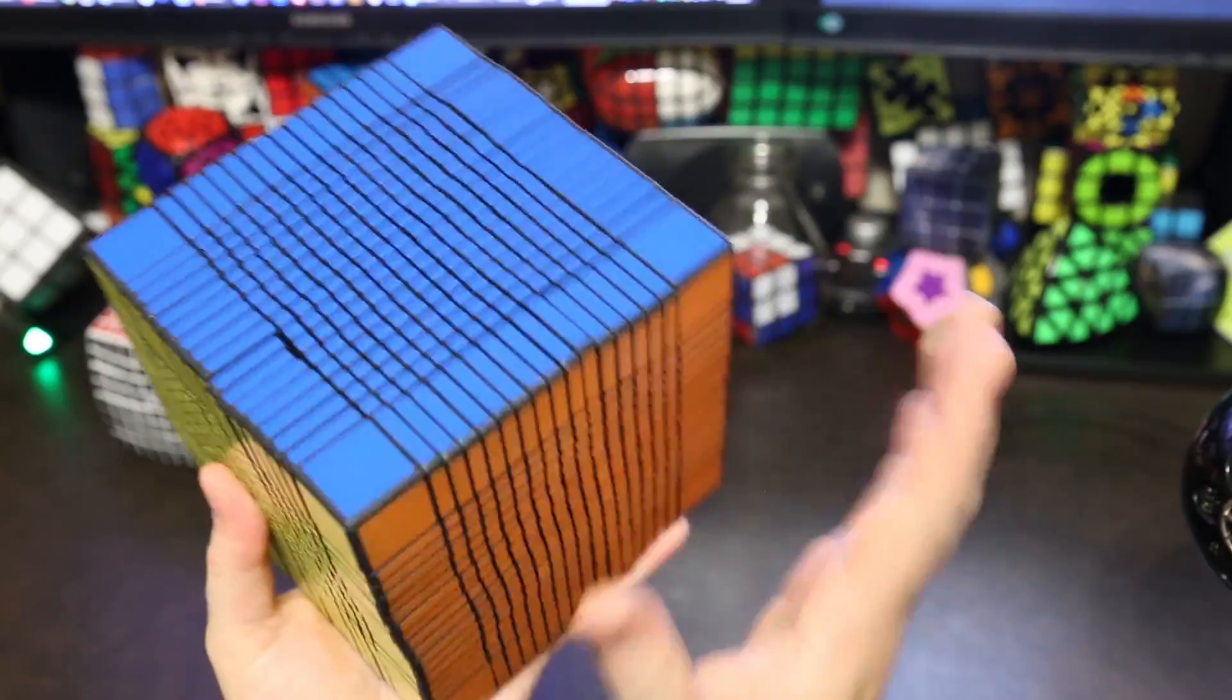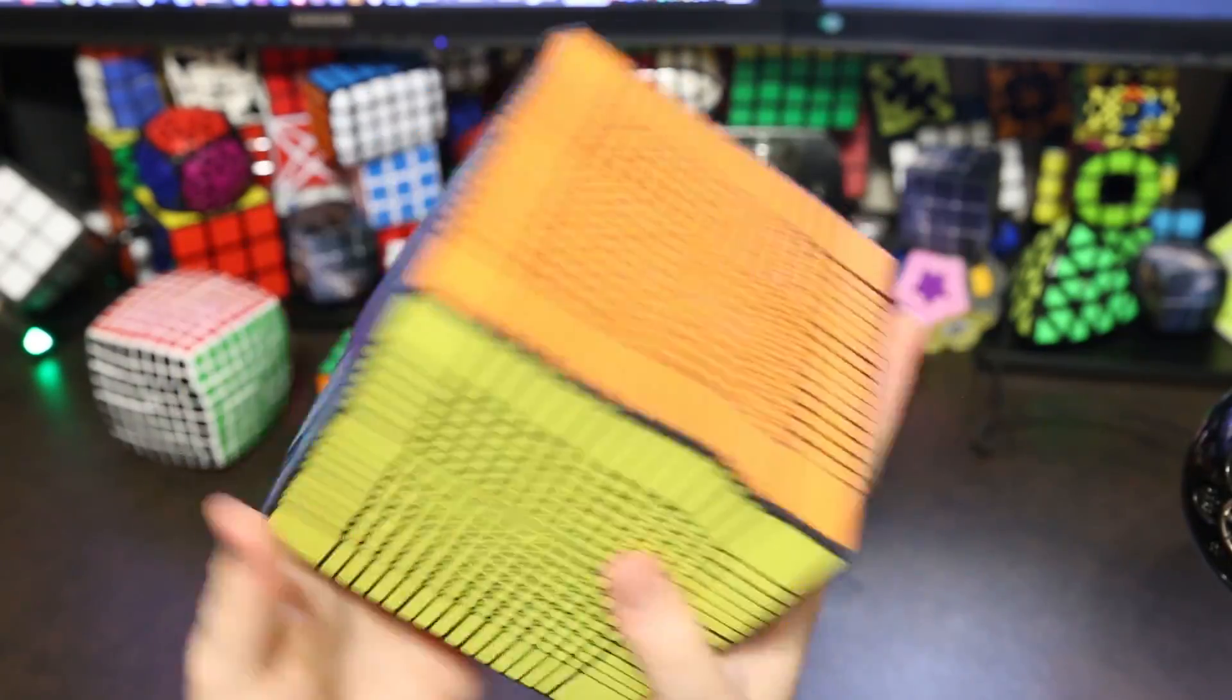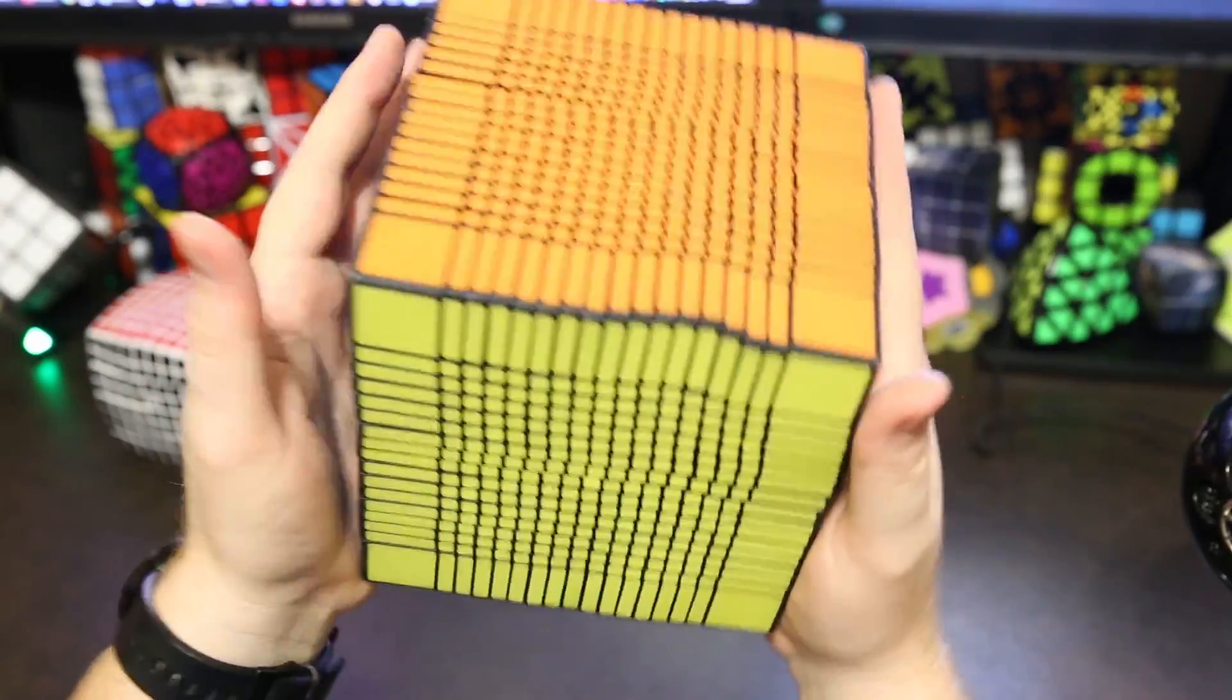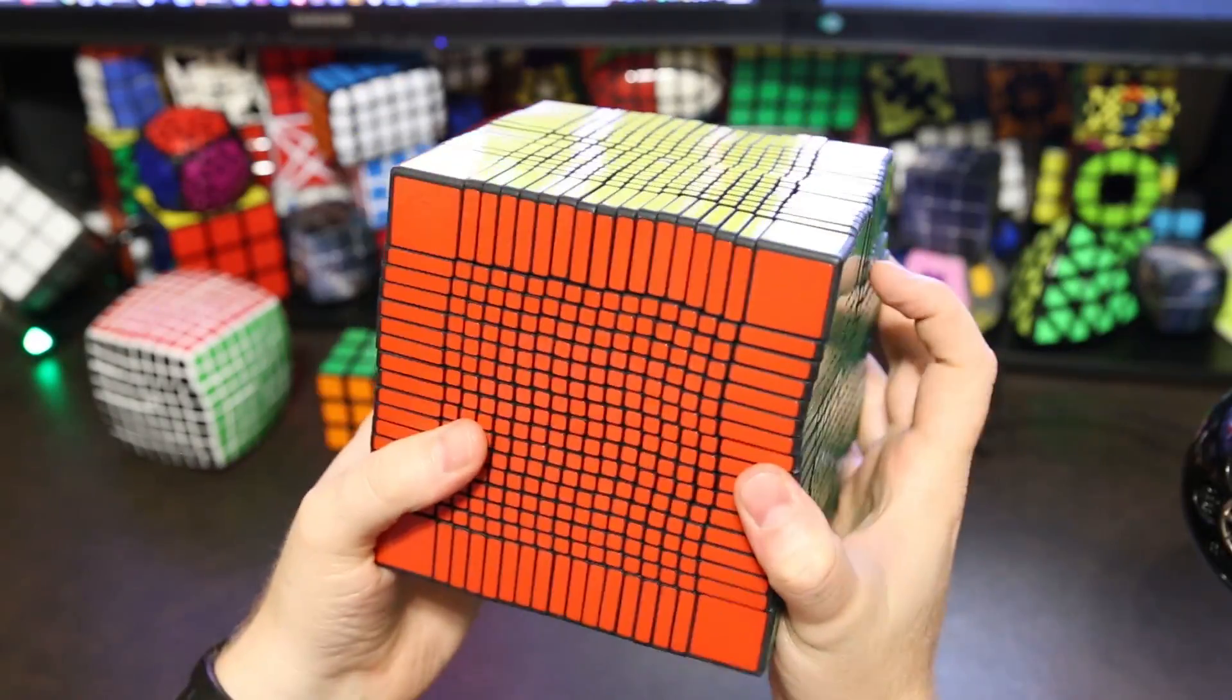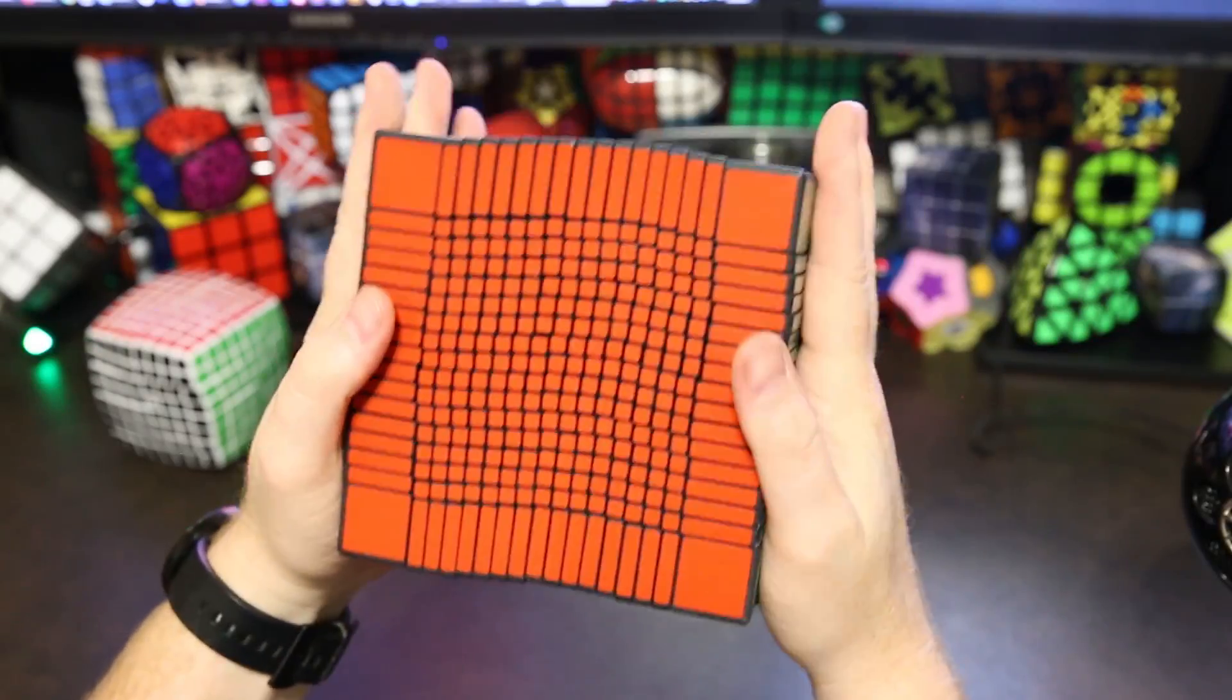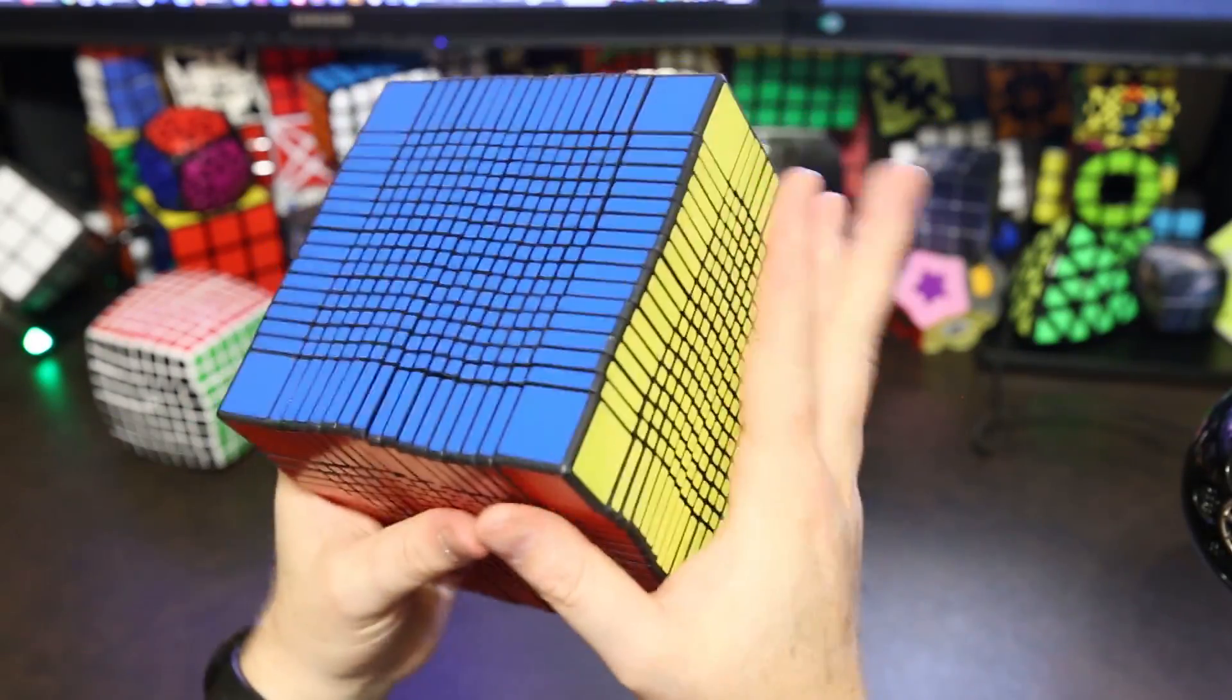I really want to thank Aaron for sending it to me so that we can see it together. So this is the 17x17 world record largest NxNxN cube ever invented by Oscar van Deventer and a lot of you have probably seen his videos on this puzzle. But anyway, I'm excited to share it with you guys.